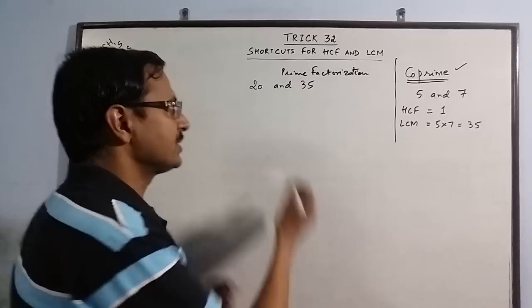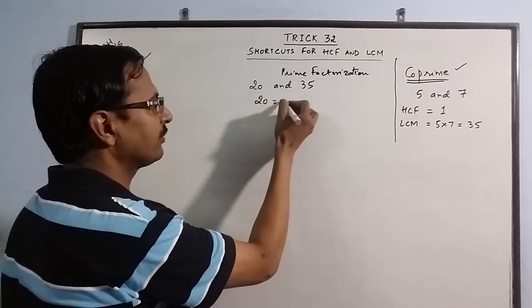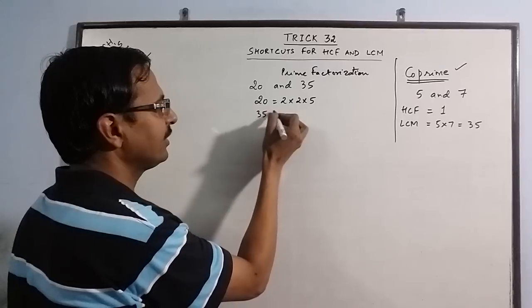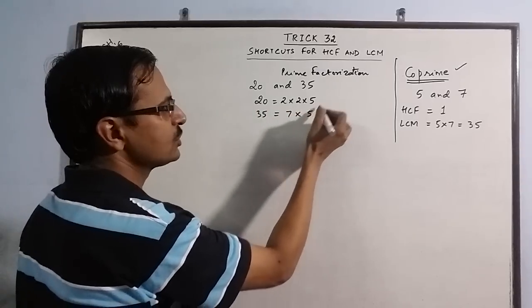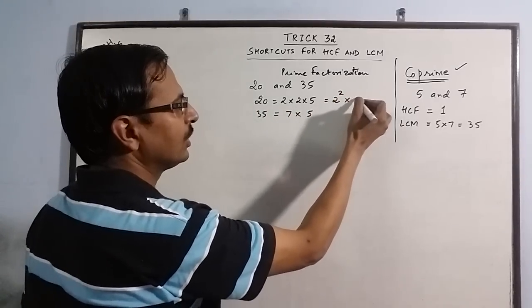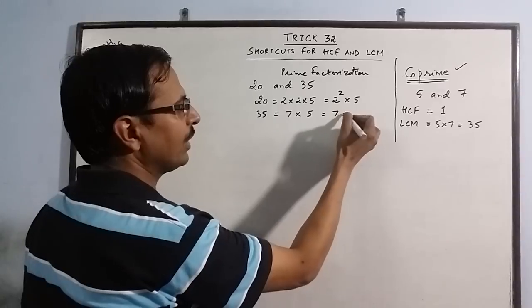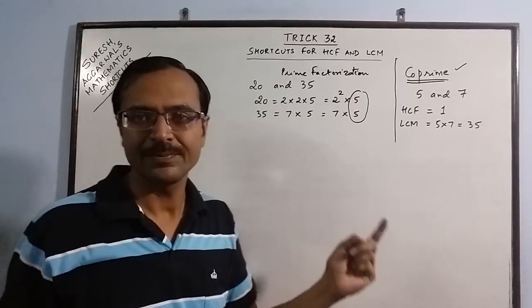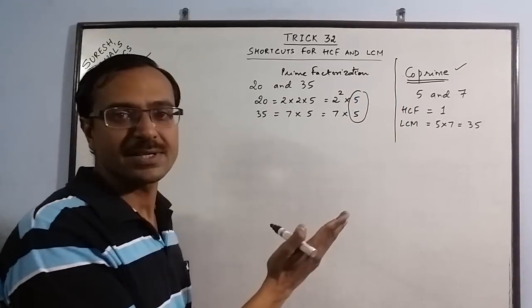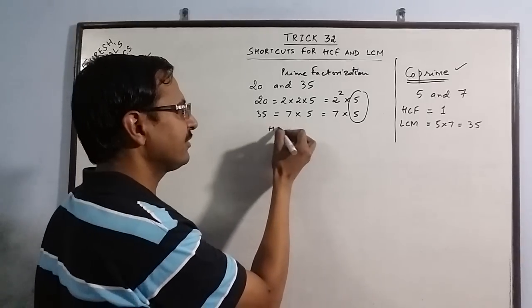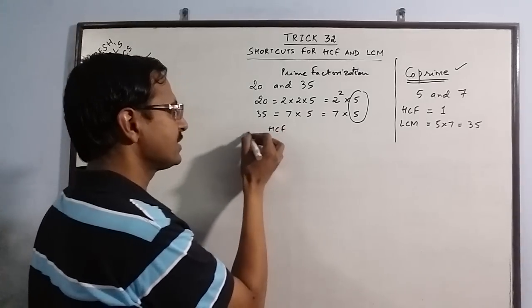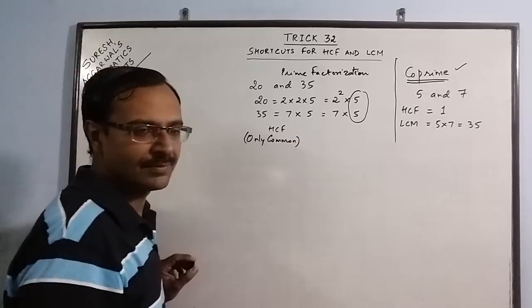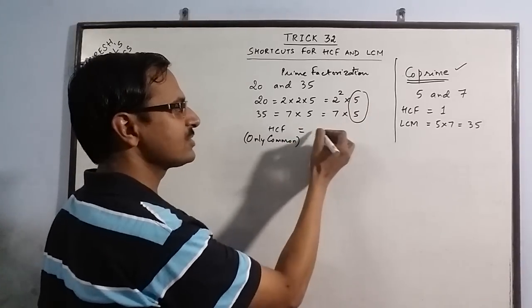Now for prime factorization, 20 has a factor of 2 into 2 into 5 and 35 is 7 into 5. So we observe here that there is one common factor 5 in these two prime factors. So when we have common factors in the numbers, the HCF is only the common factors. So HCF is only 5 is common.